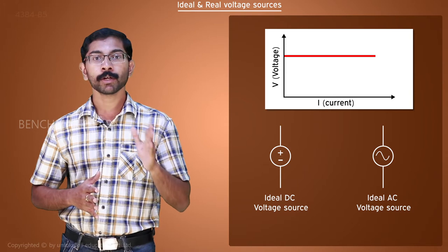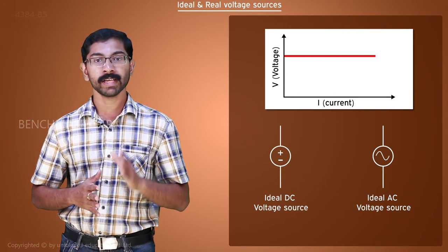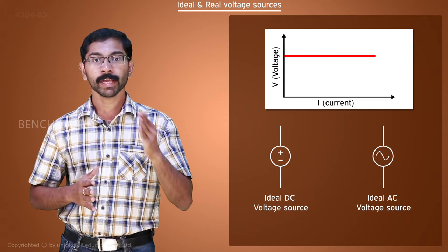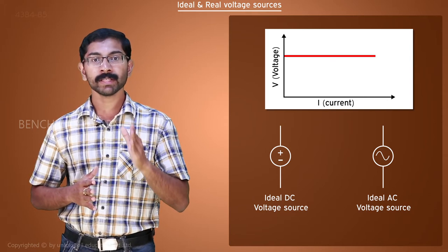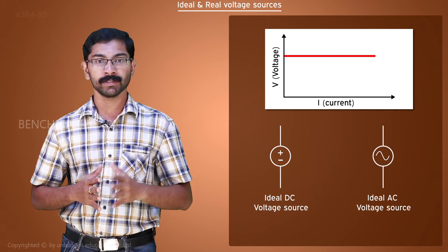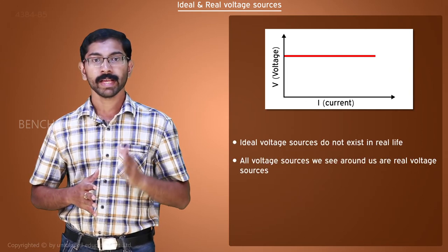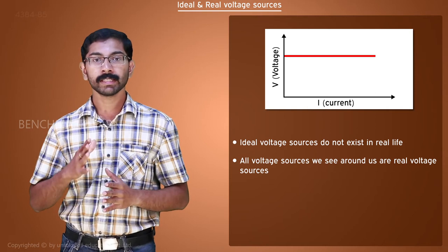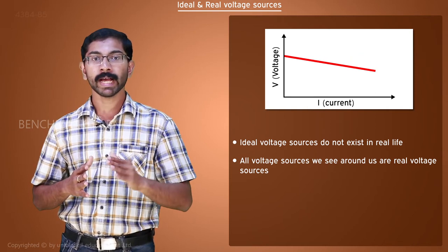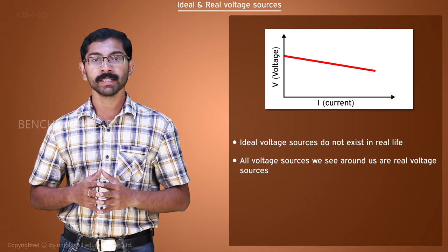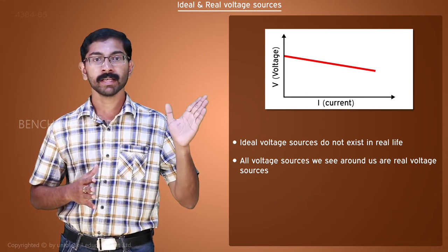Unfortunately, there are no ideal voltage sources in this world. The voltage sources we know have some imperfections which affect their voltage current characteristics. They are called real voltage sources. In real voltage sources, the terminal voltage drops as it supplies higher current. The Volt Current Characteristics of a Voltage Source is like this.